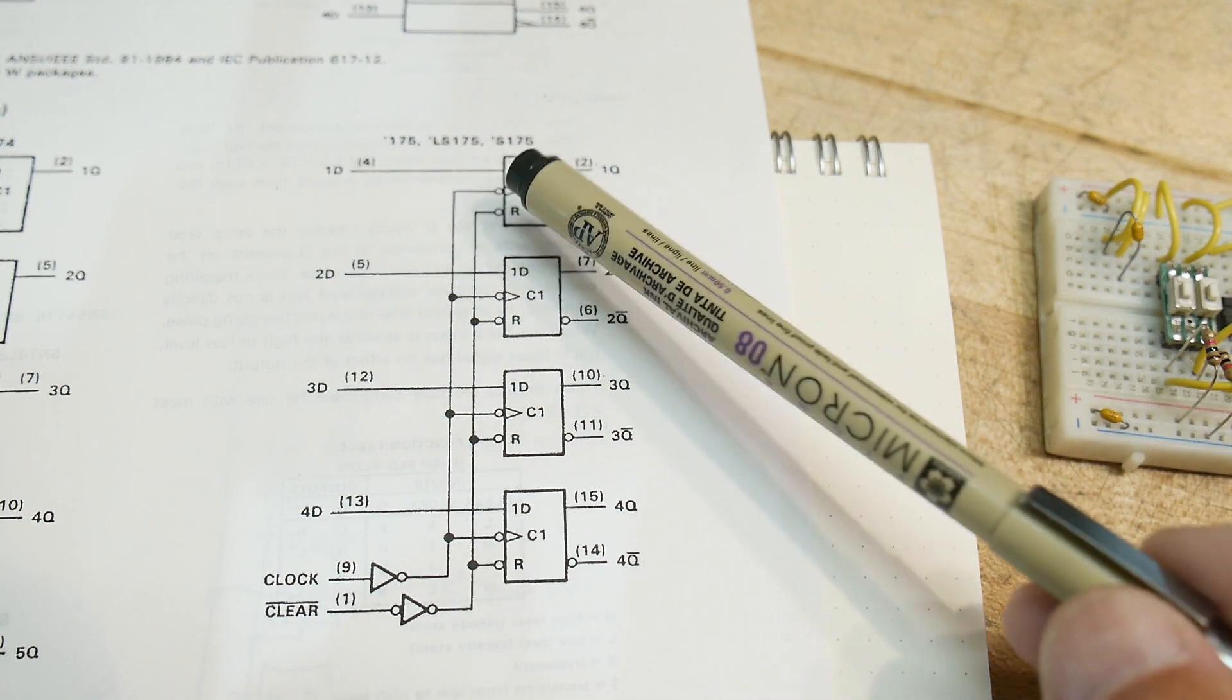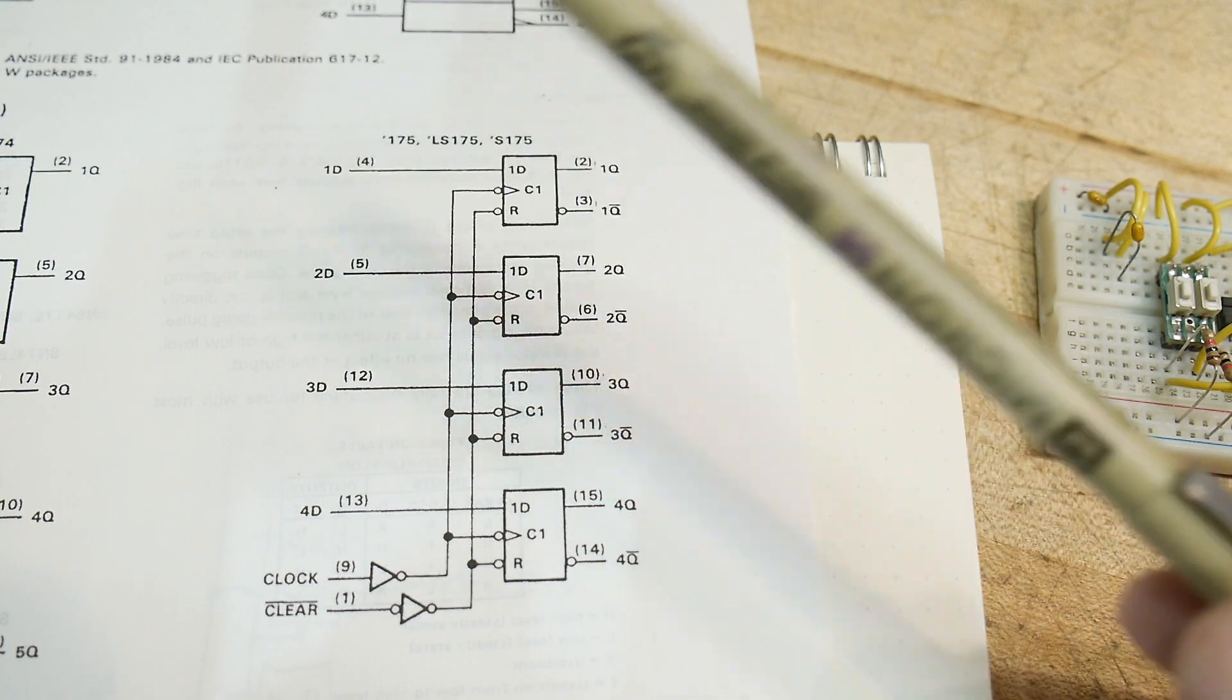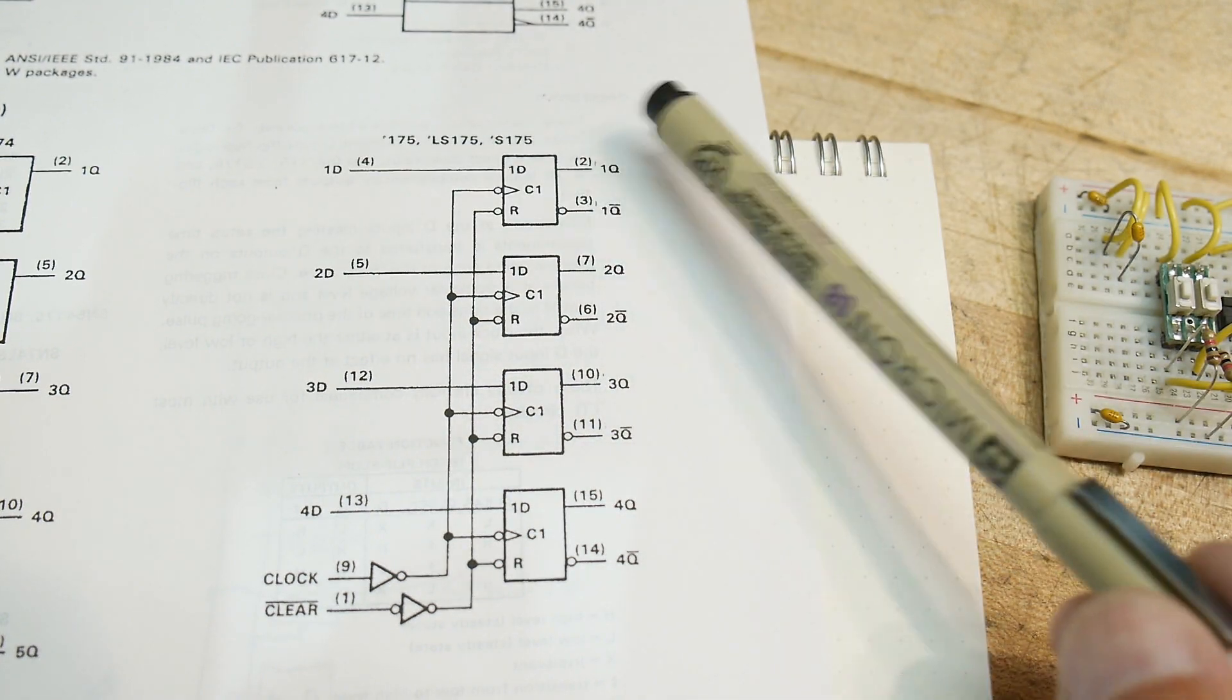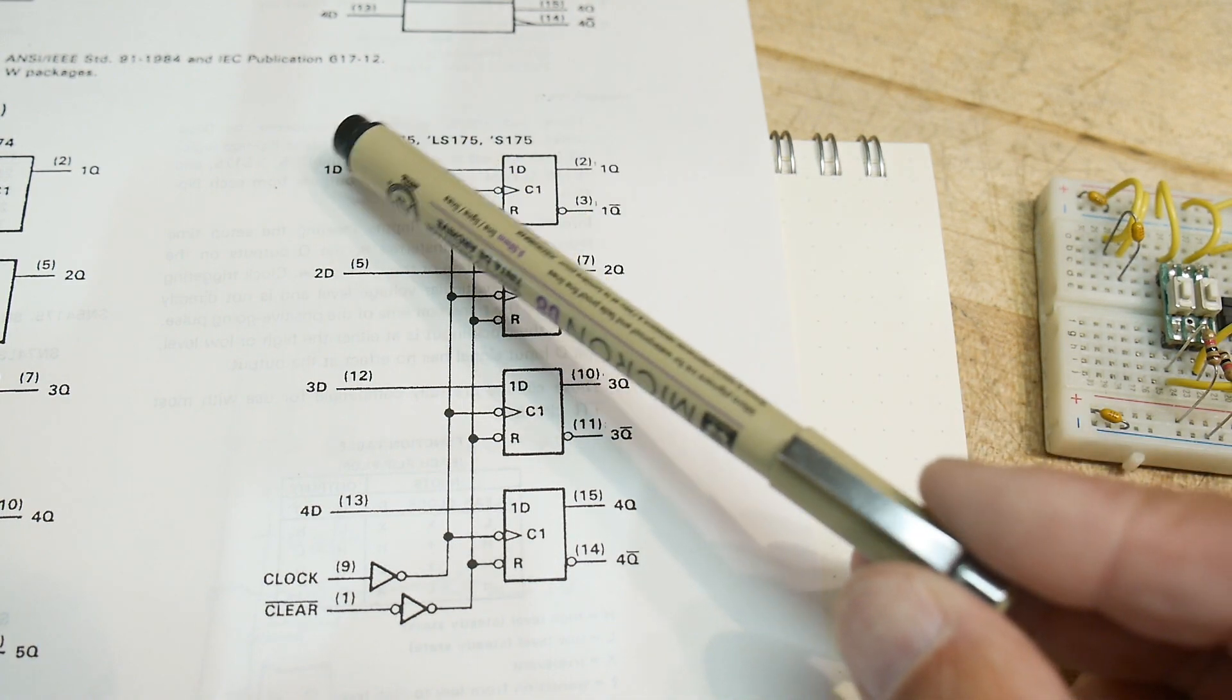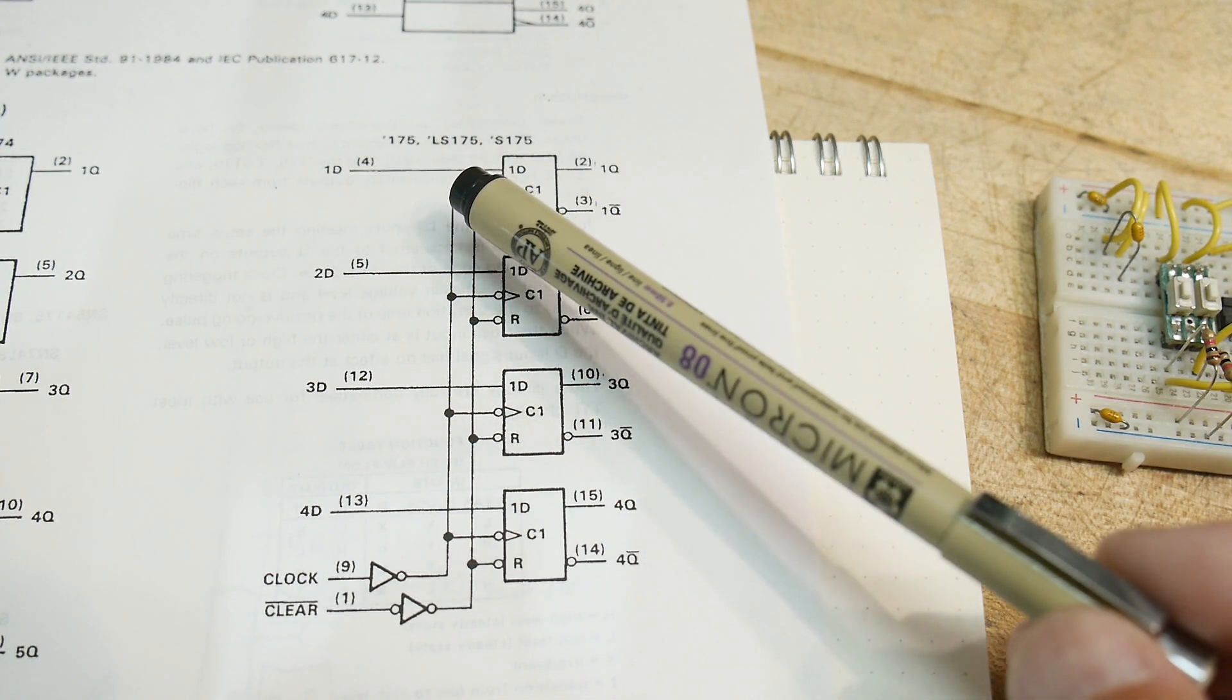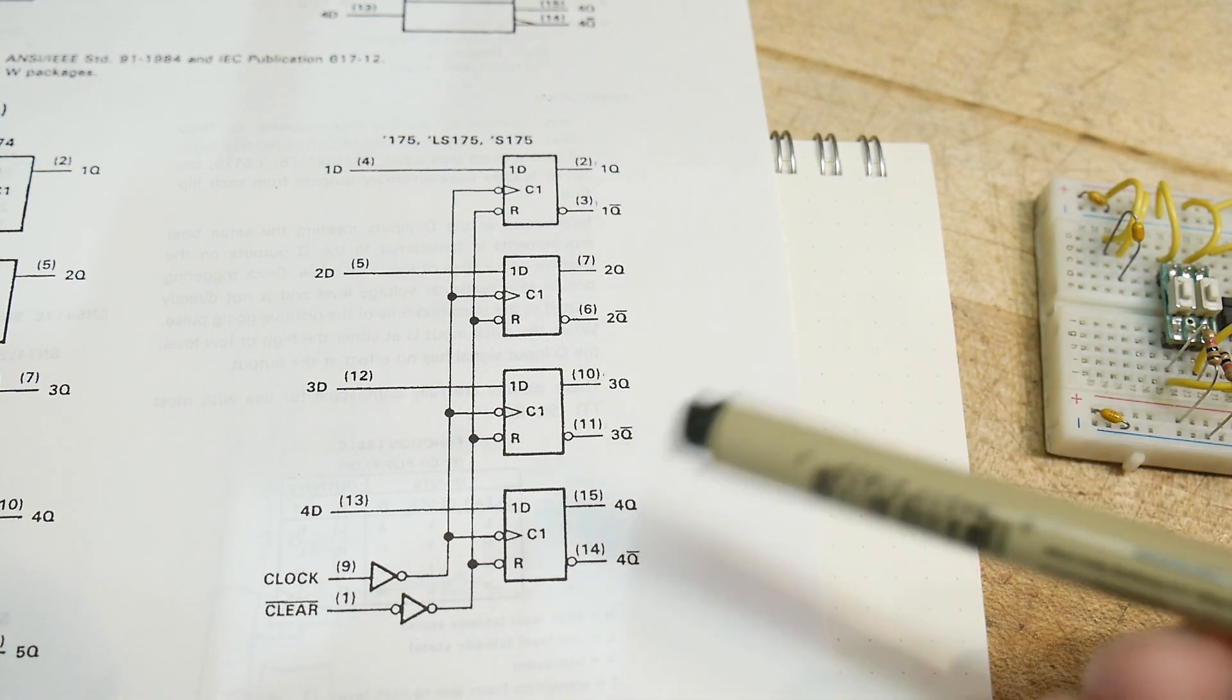So, if D is high and the clock has a rising edge, then Q will become the same as D and not Q is always the opposite. If the D is low and you get a rising edge, then Q will go low. All right. So, that's the latch part.